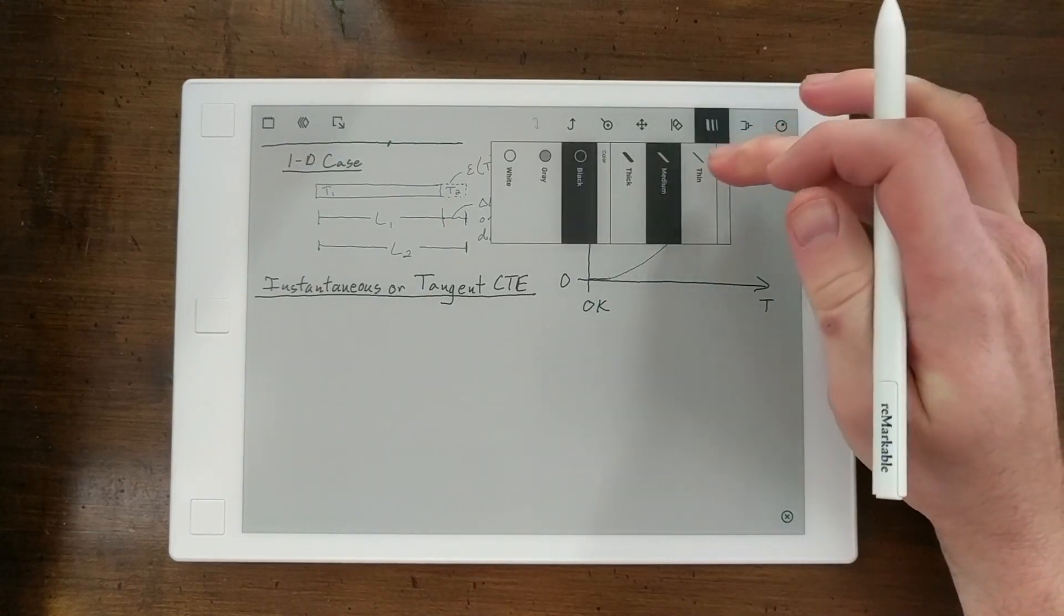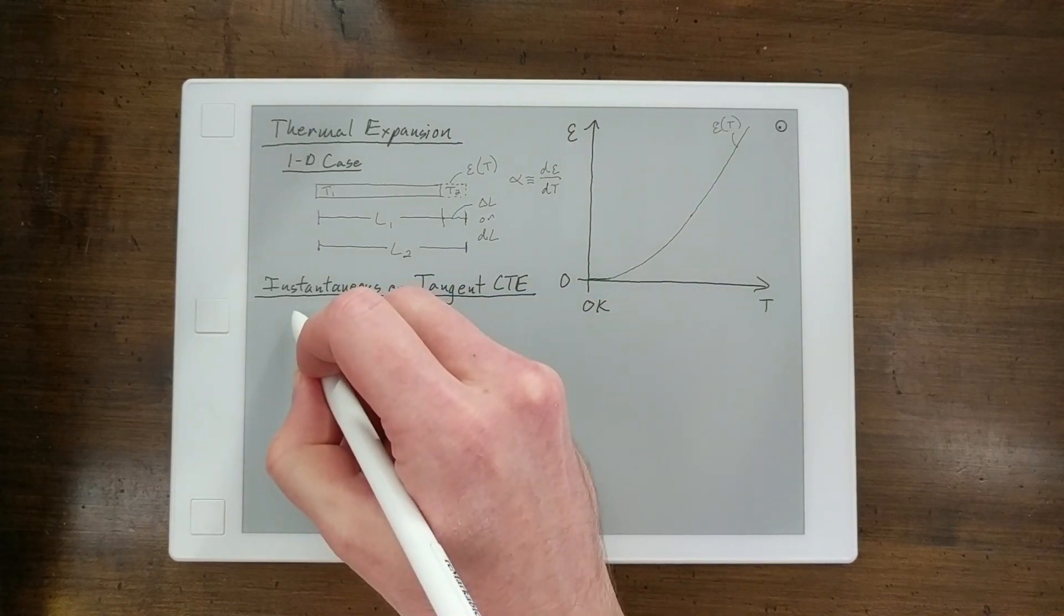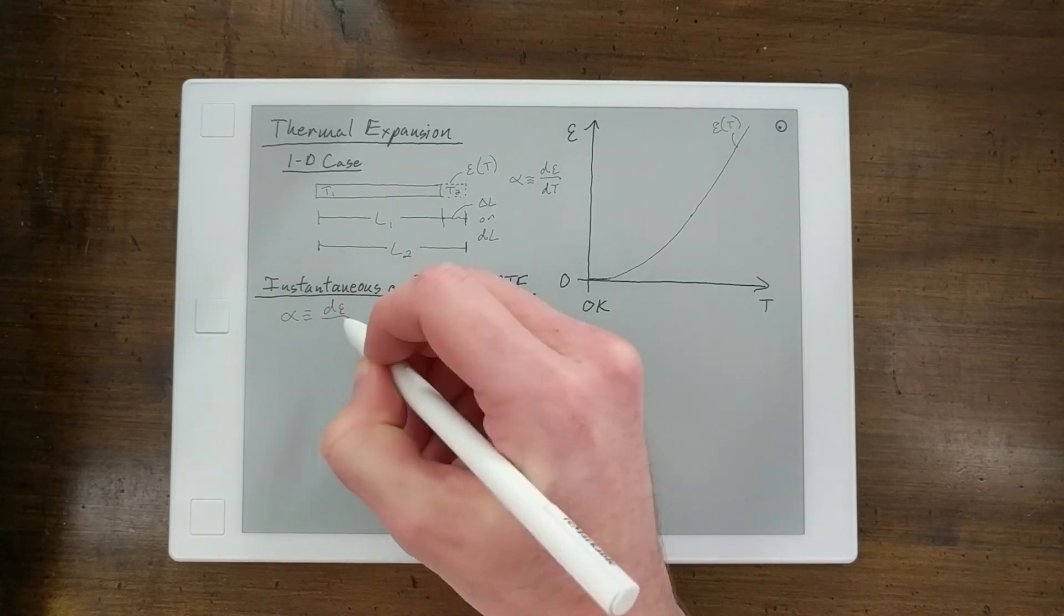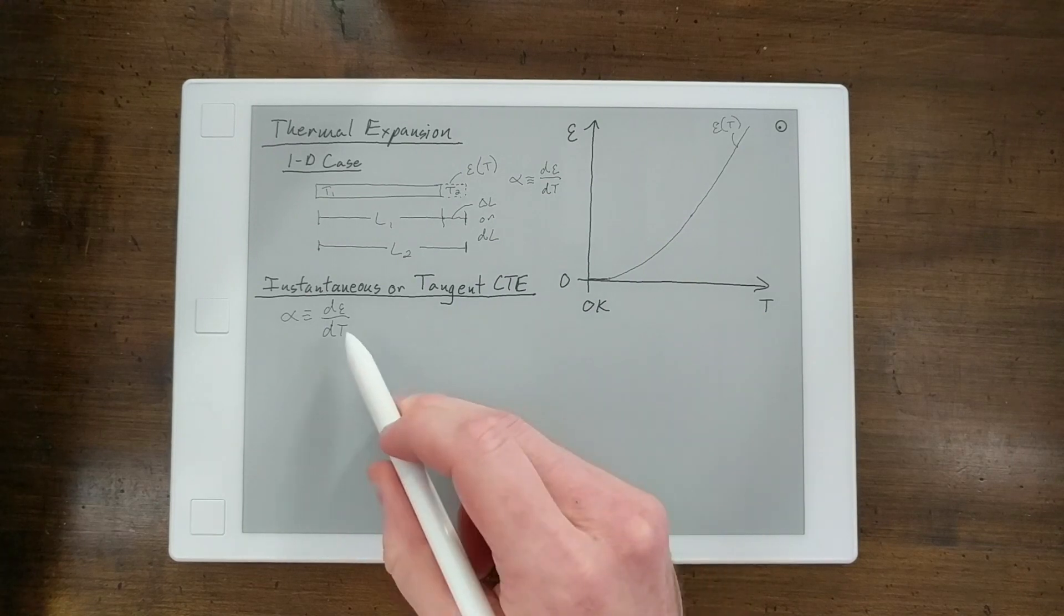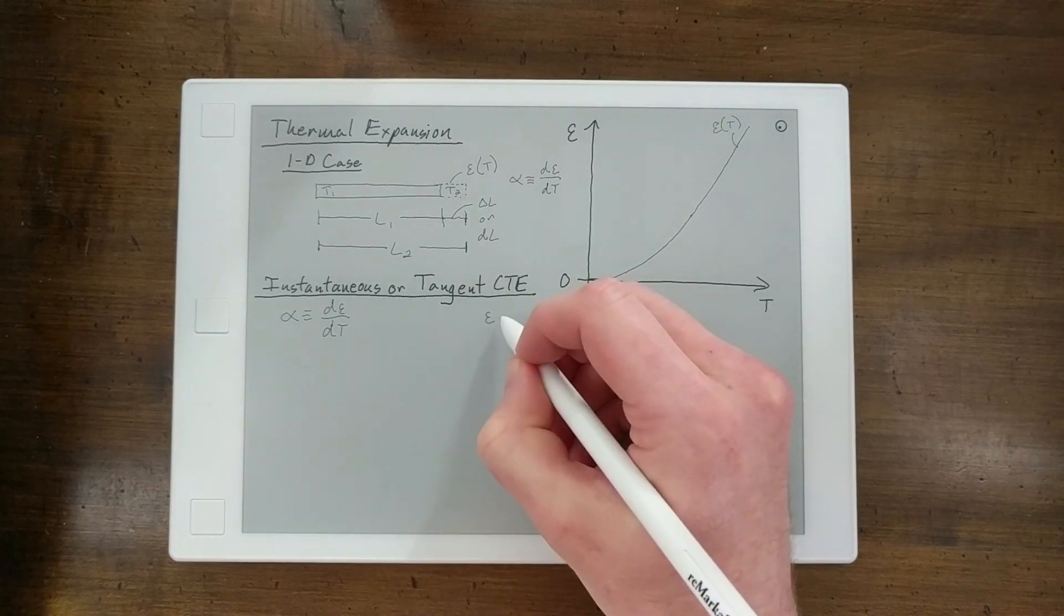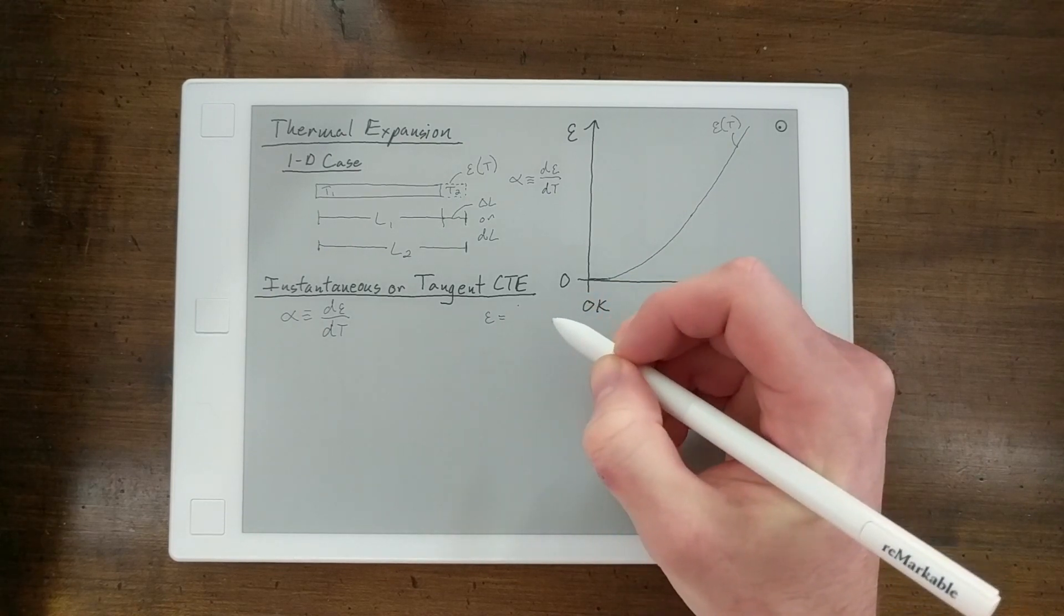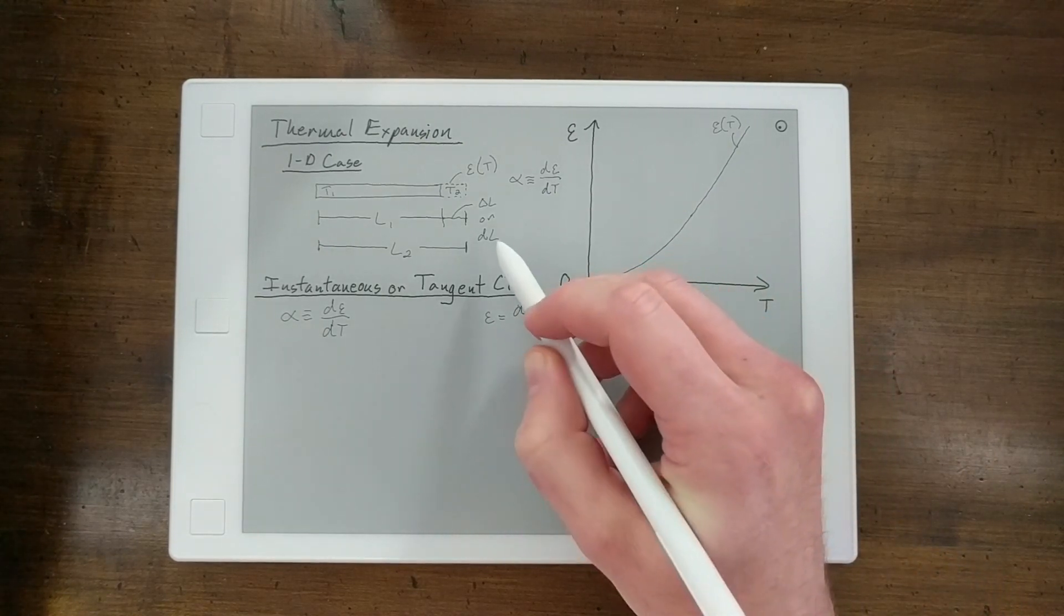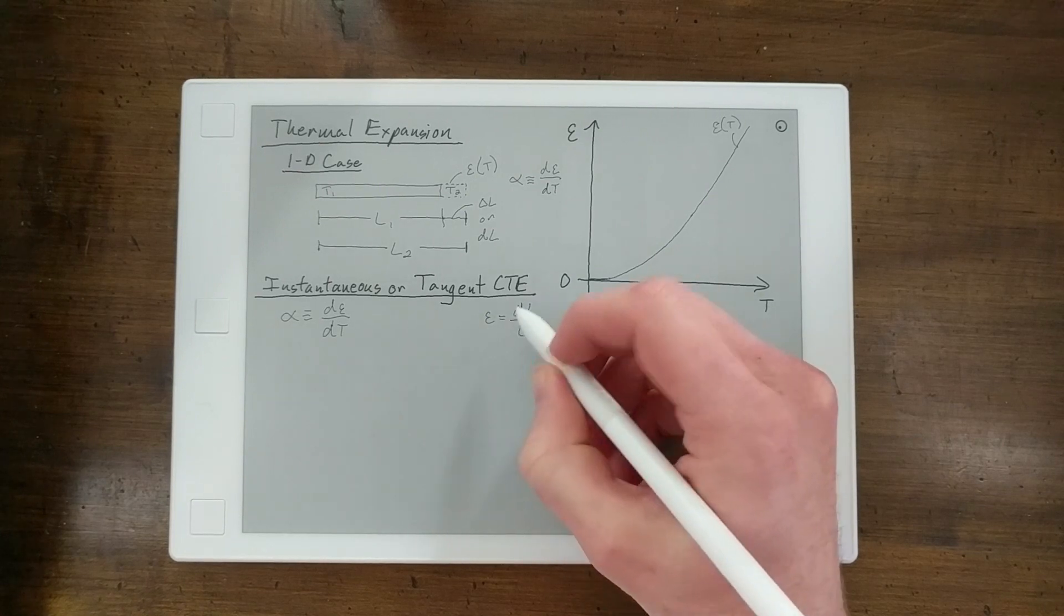So taking a closer look at that, we use that thermal expansion coefficient definition, which is the derivative, the first derivative of strain with respect to temperature. And we know that strain is equal to the incremental change in length divided by the original length, which would be L1. So this would be engineering strain.